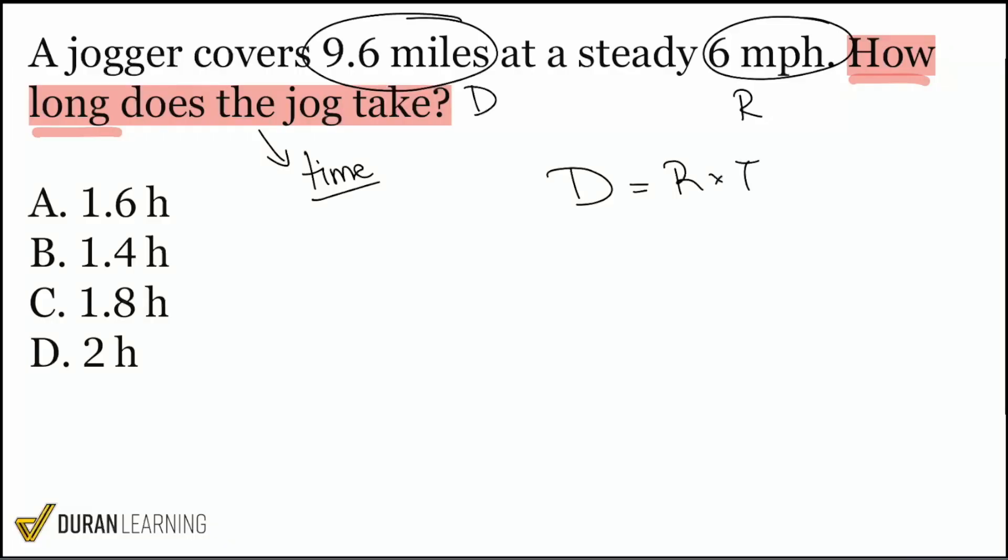And remember, the most important thing is to fill in the information in the right places. So we have distance right there, that's 9.6. We have the rate over here, so that'll be six miles an hour. And we multiply that by time. From here, notice that we are looking for time. So we're not multiplying forward to get distance. We're working backwards to get time by itself. And that means that we're going to divide. So we are going to divide both sides by the six, just like that, to get that six out of the way on the right side.